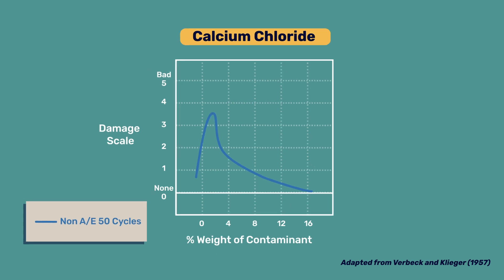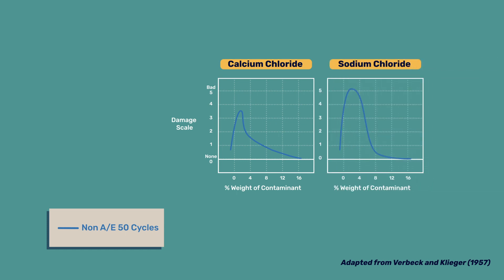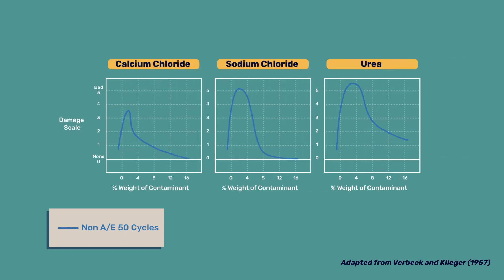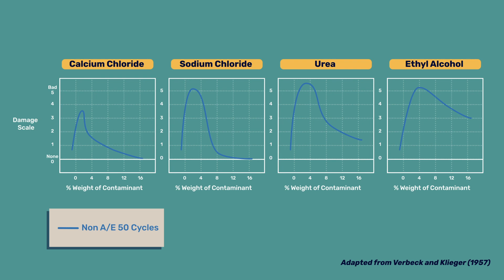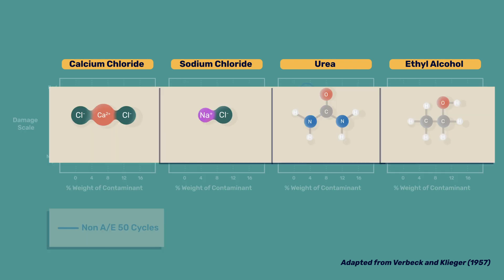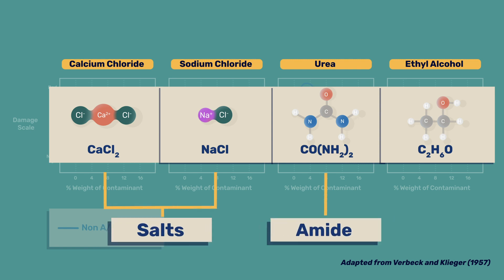The situation is quite similar with sodium chloride, but also with urea and ethanol. However, these compounds are chemically very different. Calcium chloride and sodium chloride are salts highly soluble in water, urea is an amide, and ethanol is an alcohol.